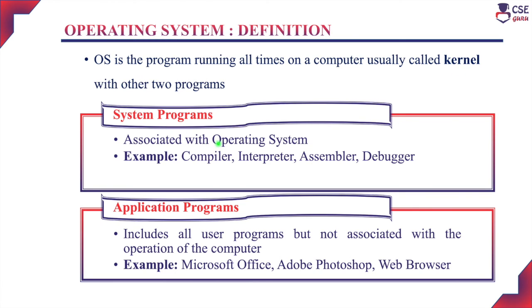System programs are associated with the operating system and help to operate the computer hardware. These system programs are installed during the OS installation itself and run only in the background, so the user cannot directly interact with them. System programs provide a basis for the application program — with the support of the system program only, the application program will run.